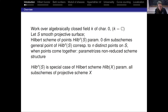This Hilbert scheme of points on the surface is a special case of the general Hilbert scheme. For any projective scheme, there is the Hilbert scheme which parametrizes all sub-schemes of this projective scheme. It has many components, and for a surface, one of them will be the Hilbert scheme of n points on S. The Hilbert scheme and its generalization, the quot scheme, is one of the main sources of moduli spaces in algebraic geometry. Most moduli spaces are either Hilbert schemes or quot schemes, or obtained from them via some kind of GIT quotient construction.